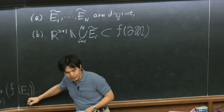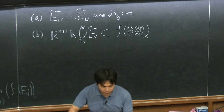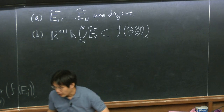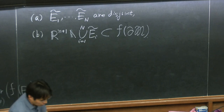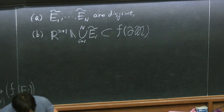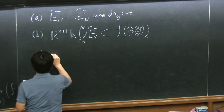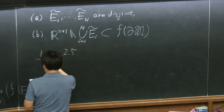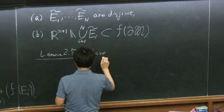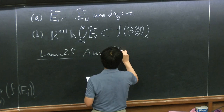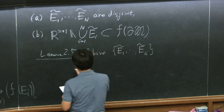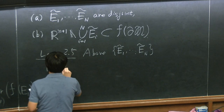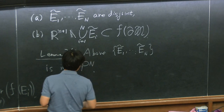I'll explain why this is a natural choice with an example in a moment. But first, let me point out that this admissible class of Lipschitz maps preserves the structure of open partitions. Lemma 2.5: the above defined Ẽ_1, ..., Ẽ_N is again an open partition of N elements. It's very easy to check.